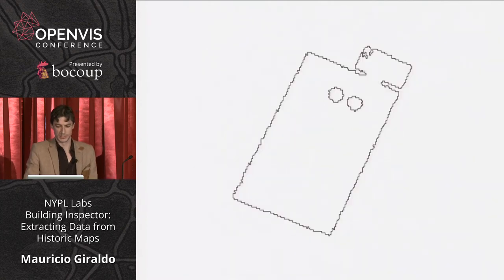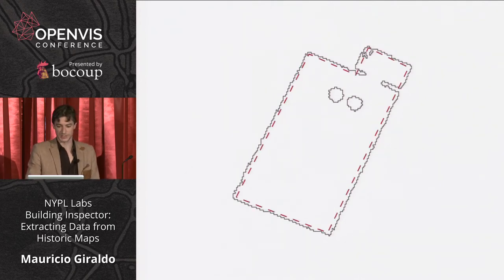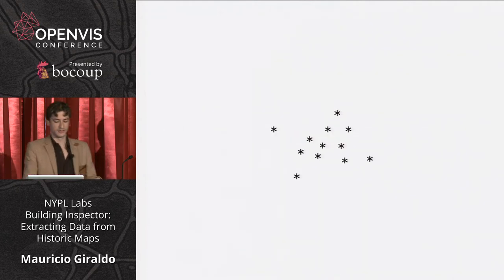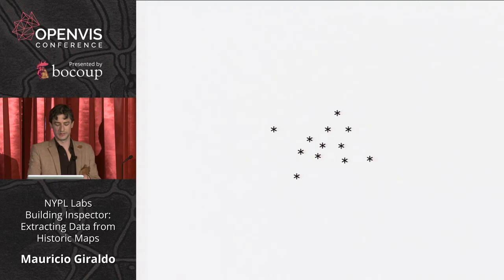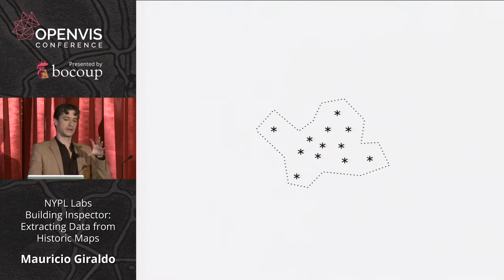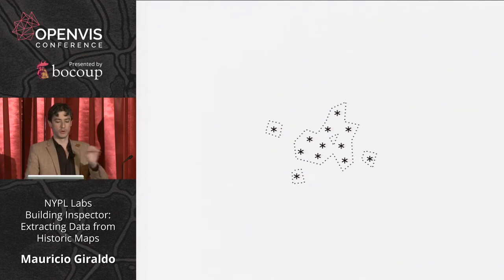This is one example of those polygons, and we'd like something resembling the shape in red. So this goes through a process in R — an alpha-shaped convex hull with a sample point set. Different parameter values give you a tighter fit, an enclosing polygon to those points. A wider parameter will give you a single polygon but with less detail. We want a point in between: the detail of the polygon, but only one polygon.